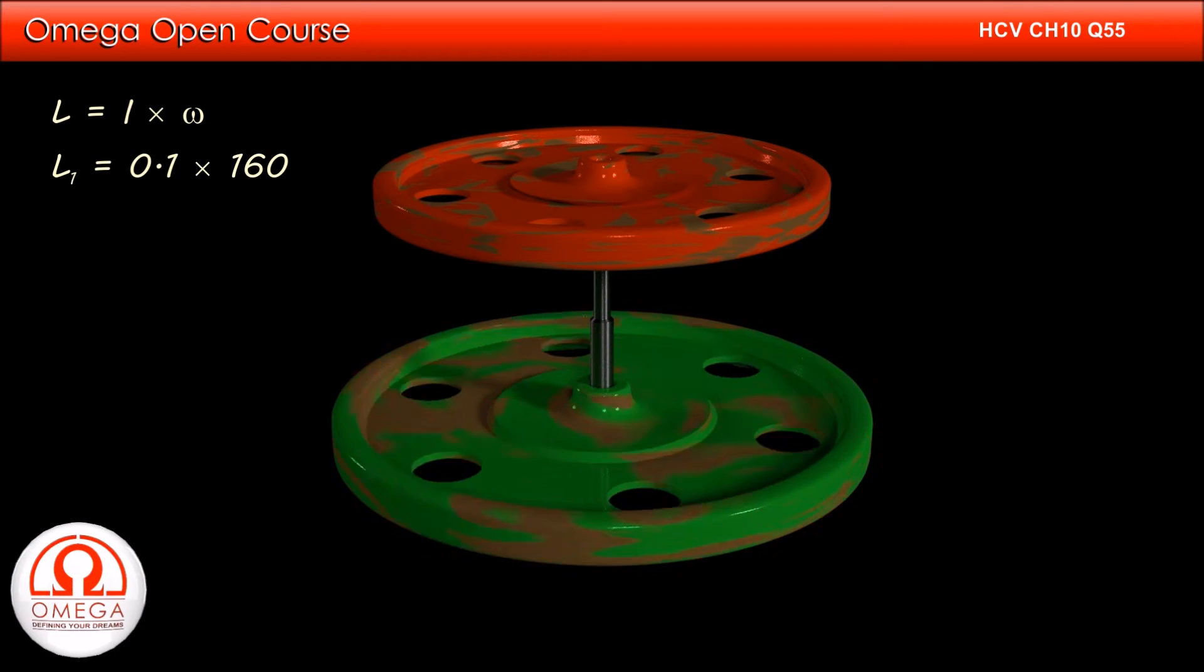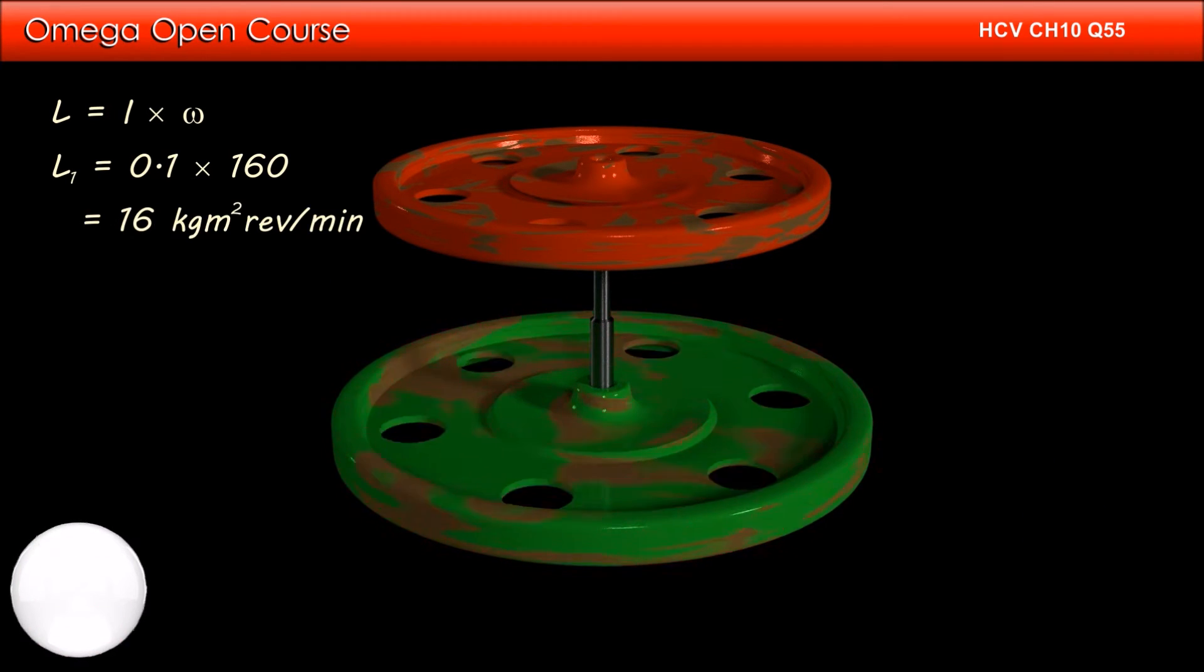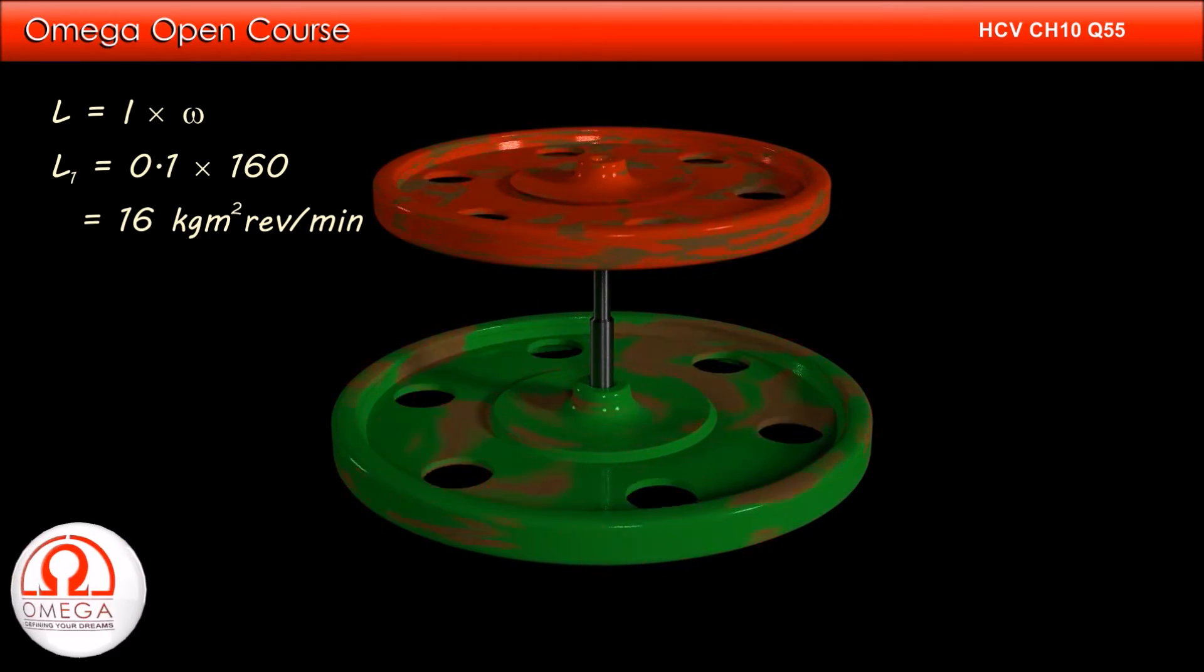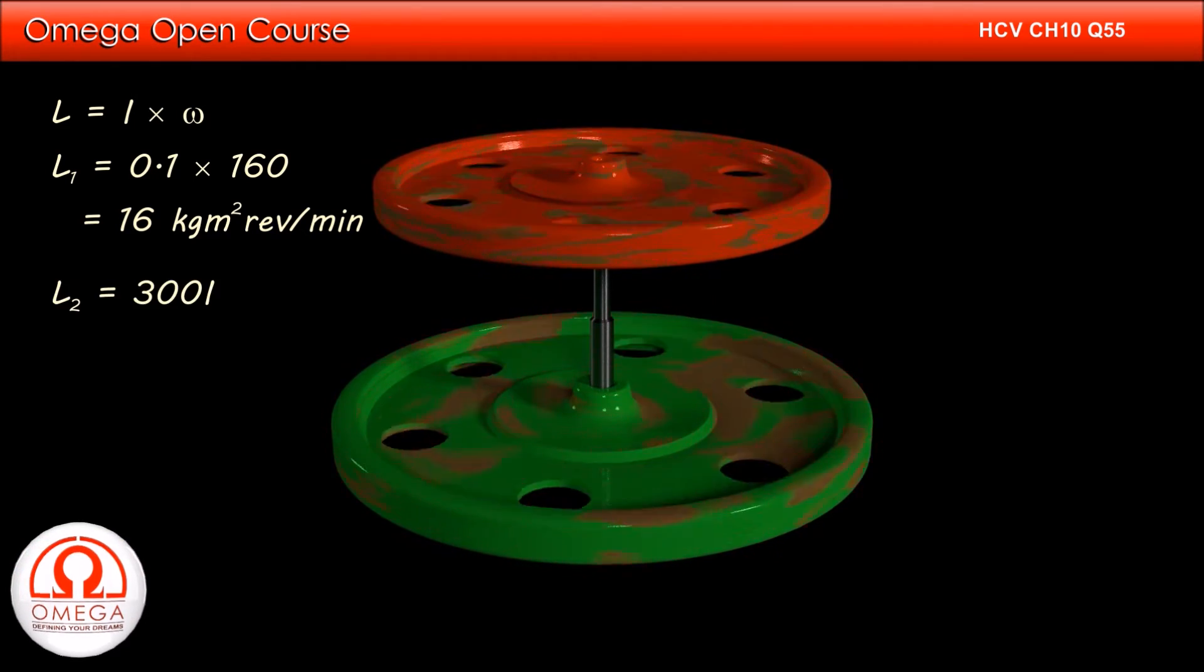So, the angular momentum of the first wheel is 0.1 into 160 or 16 kg meter square revolution per minute. If we assume the moment of inertia of the second wheel to be i, then its angular momentum is 300i.